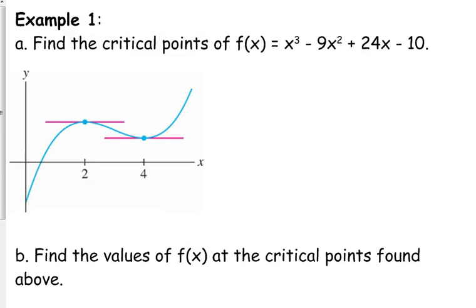So let's find some critical points of this function. Now, I gave you the picture of the function, so we should know what the answer is going to be. What are the critical points of this function? Two and four. Two and four. That's where the horizontal tangent lines are.